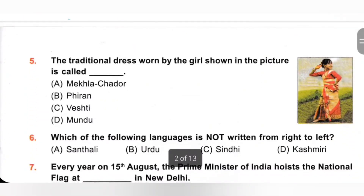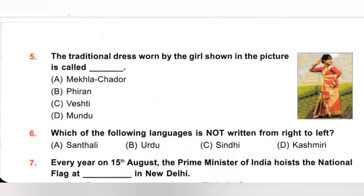5th. The traditional dress worn by the girl shown in the picture is called: A. Mekhela Chador, B. Firan, C. Vesti, D. Mundu. The traditional dress is Mekhela Chador. It is a sari comprising two pieces of cloth worn by women of Assam. Option A is the correct answer.